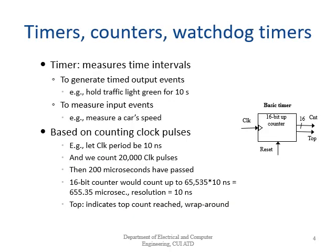Now we will discuss timers, counters, and watchdog timers. A timer is basically used to measure time intervals — how much time has elapsed. We can also use a timer for generating time-based output events, like keeping a traffic light green for 10 seconds then doing something after. The second use is to measure input events; for example, measuring the speed of a car by timing intervals.